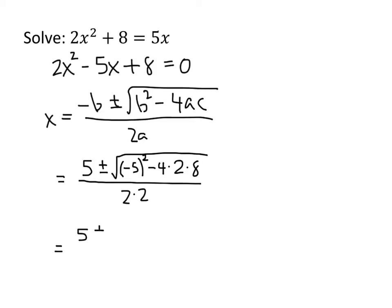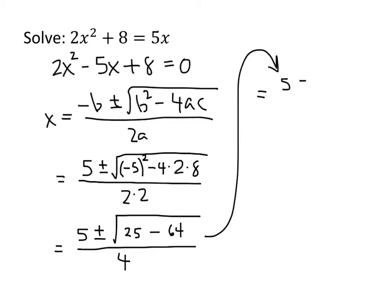So we get 5 plus or minus. Inside that square root, negative 5 squared is positive 25, minus 4 times 2 is 8 times 8 is 64. And then 2 times 2 is 4. So continuing on, we get 5 plus or minus the square root. Now 25 minus 64 is negative 39.